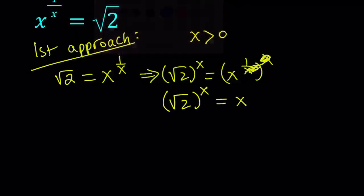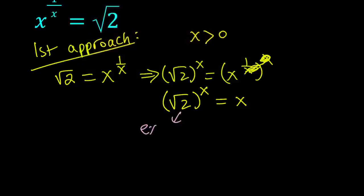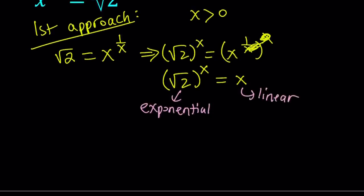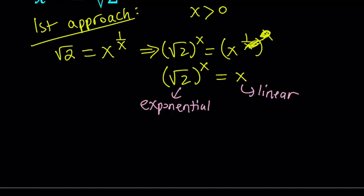Now this is nice because on the left hand side we do have an exponential equation and on the right hand side we do have a linear function. And we want them to intersect and find the intersection point. How many intersection points can they have? First of all, exponential functions are pretty much always concave up.